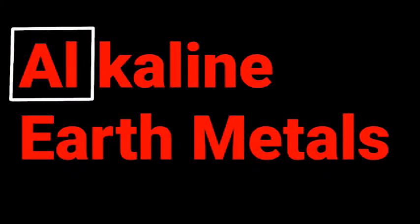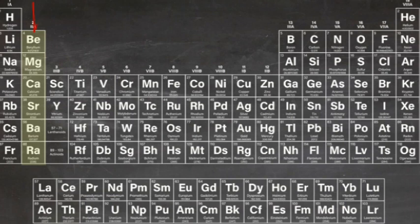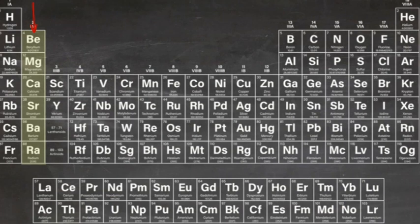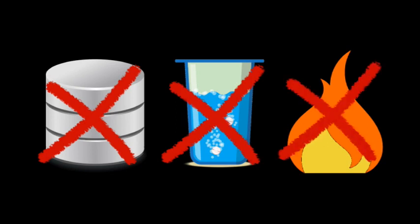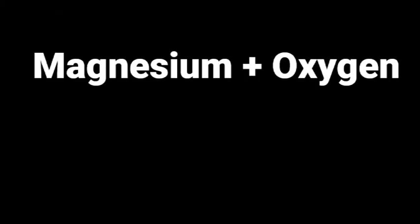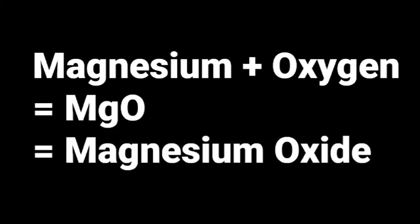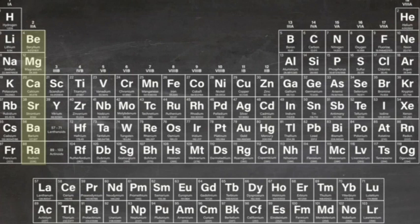Alkaline earth metals. The alkaline earth metals make up the second column or group of the periodic table from beryllium through to radium. Scientists used to call elements that were non-metallic, water-insoluble and fire-resistant 'earths'. In actual fact these elements were compounds composed of a metal and oxygen. Later these compounds were renamed oxides. The metal components of the oxides behaved differently but still resembled the alkali family metals. The two concepts were combined to create the name we now know them by: alkaline earth metals.